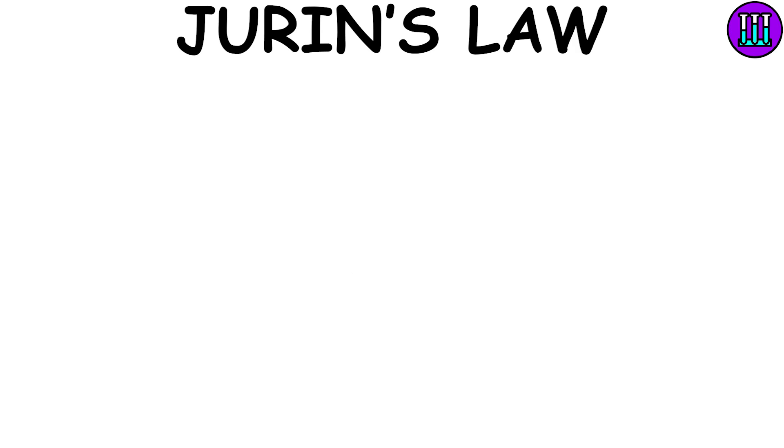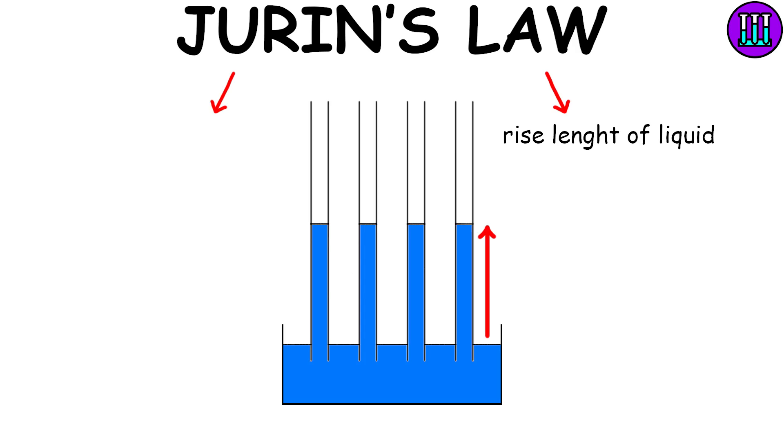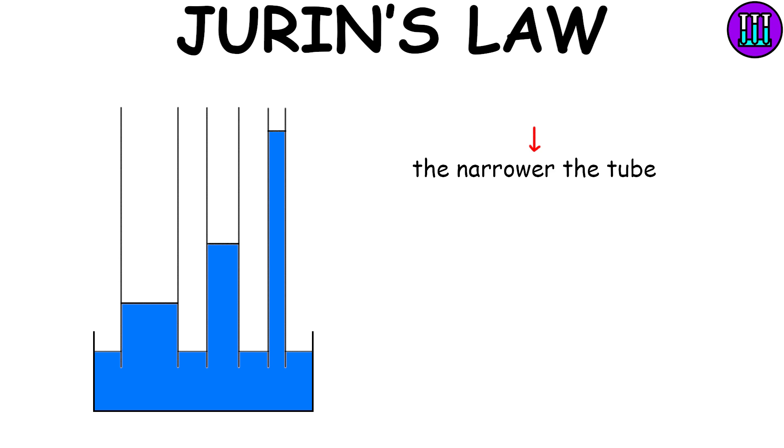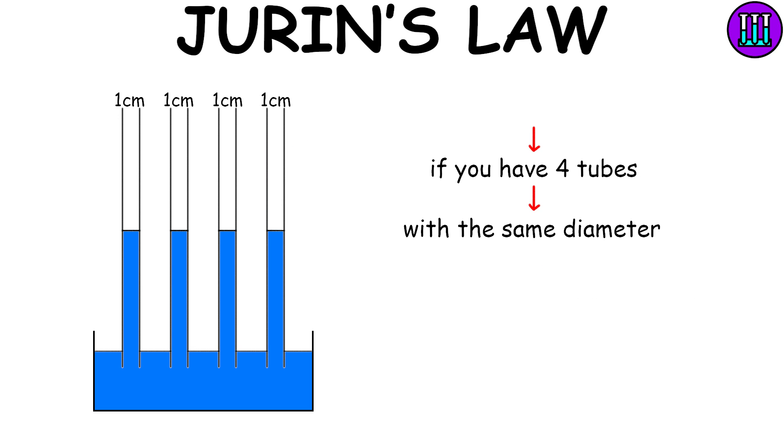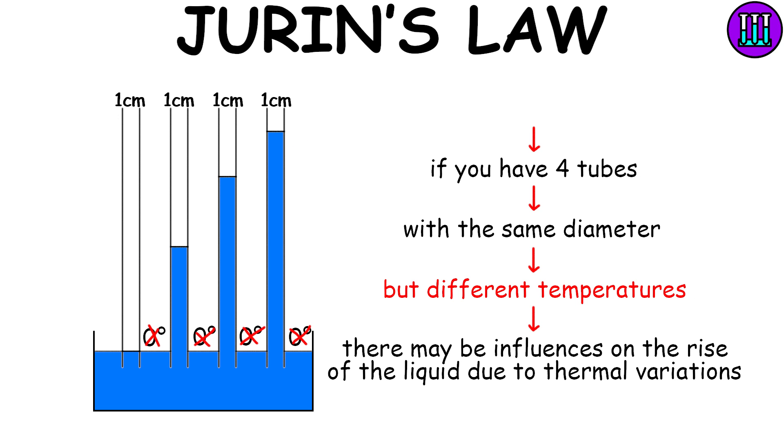Juren's Law describes the relationship between the rise length of a liquid in a capillary tube and its physical properties. This means that the narrower the tube, and therefore the smaller the diameter, the greater the liquid will rise. If you have four tubes with the same diameter but different temperatures, there may be influences on the rise of the liquid due to thermal variations.